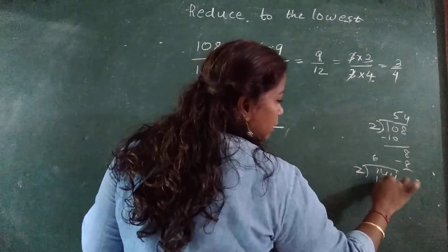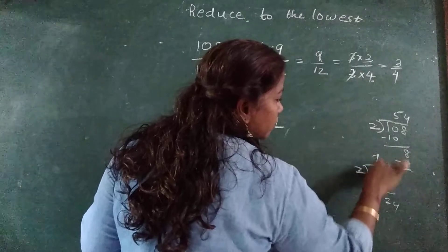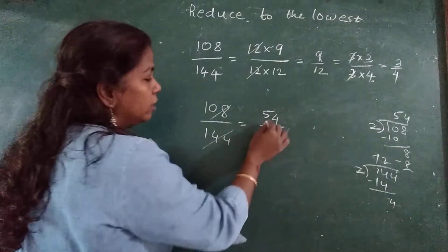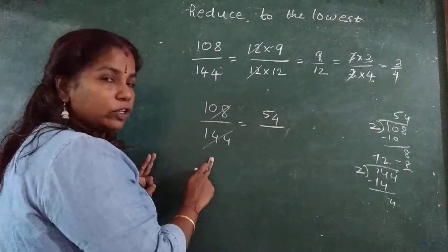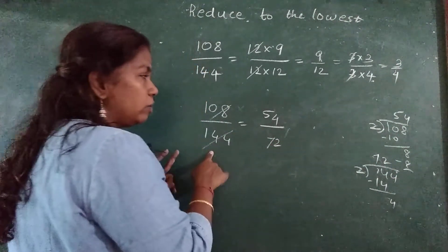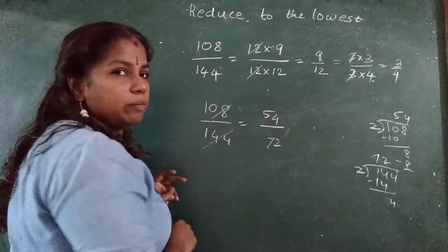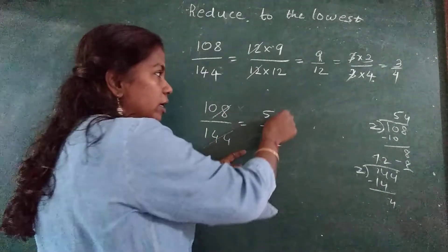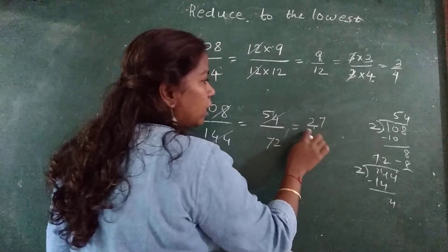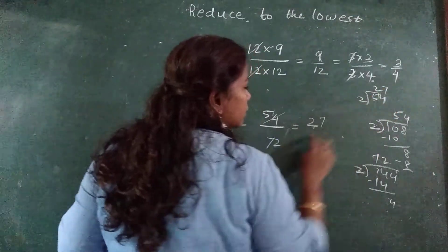144 when I divide with 2. 2 sixes are 12, minus, 2 sevens are 14. Then bring 4 down. 2 twos are 4. Then 144 will go as 72. When I reduce it I will get this number. This is also even, so when I reduce 2, 2. 2 twos are 4, 1 carry, 2 sevens are 14.